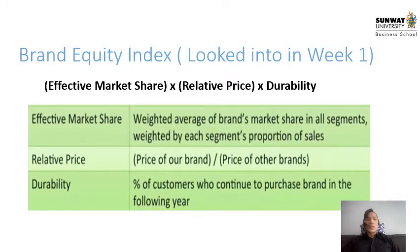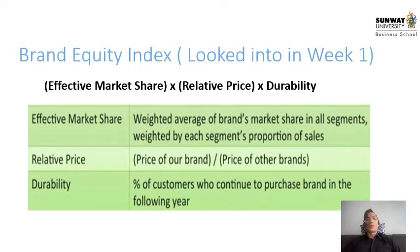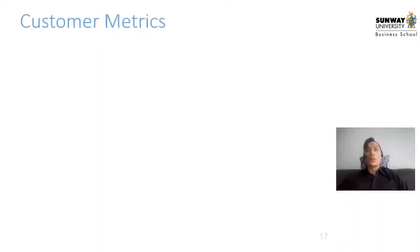We can also use the brand equity matrix, which we looked at in week one. It is essentially: effective market share × relative price × durability. The effective market share is the weighted average of the brand's market share across all segments, weighted by each segment's proportion of sales. Relative price is our brand's price over the price of other brands. Durability is the percentage of customers who continue to purchase the brand in the following time period.